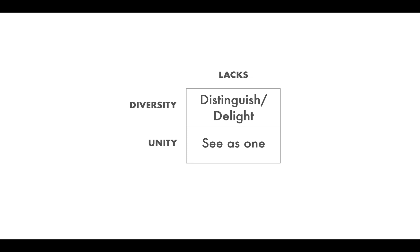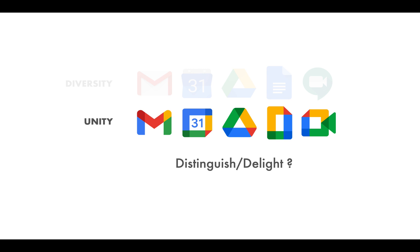Now, if you focus too much on diversity, then you will lose the ability to see all the icons as part of one brand — to see them as one. So if we look at what Google has done here, clearly they have swung the pendulum over to unity. These icons are far more unified, but if you focus too much on unity and you're not balanced with diversity, you lose the ability to distinguish and delight.